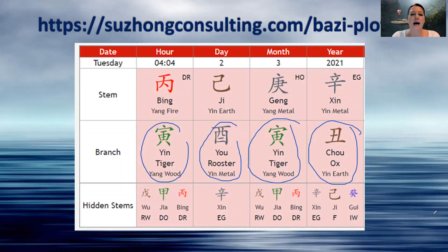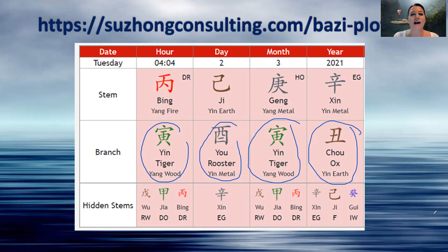So you don't have to be born in the year of the rooster in order for this particular forecast to apply to you. If you have more than one rooster, that's also fine. Sometimes you have people who have four identical animal signs in the hour, day, month and year — it happens rarely, but it does happen. All you need to check is: do you have the rooster anywhere? And if you do, then this forecast applies to you.